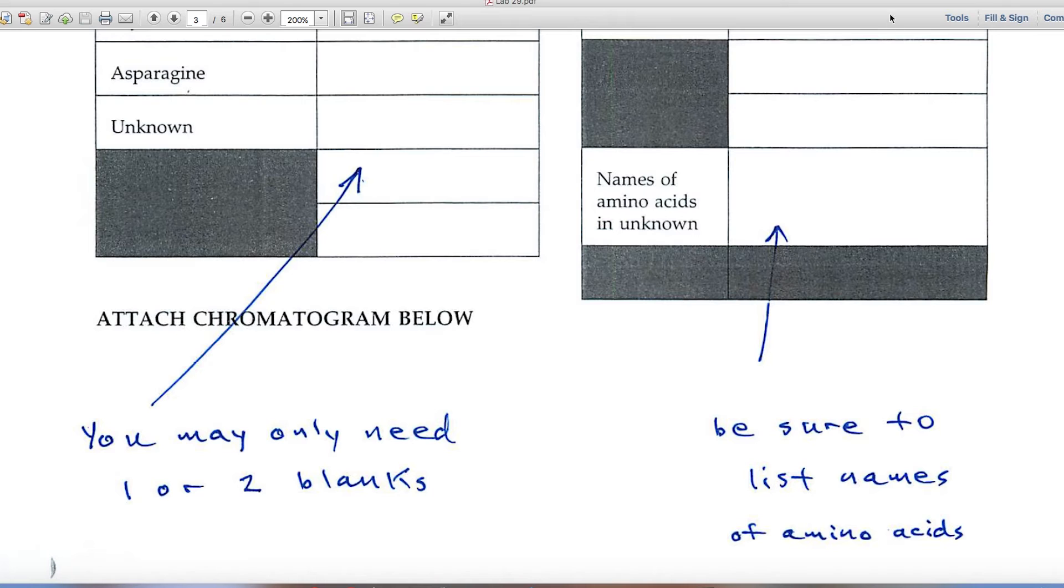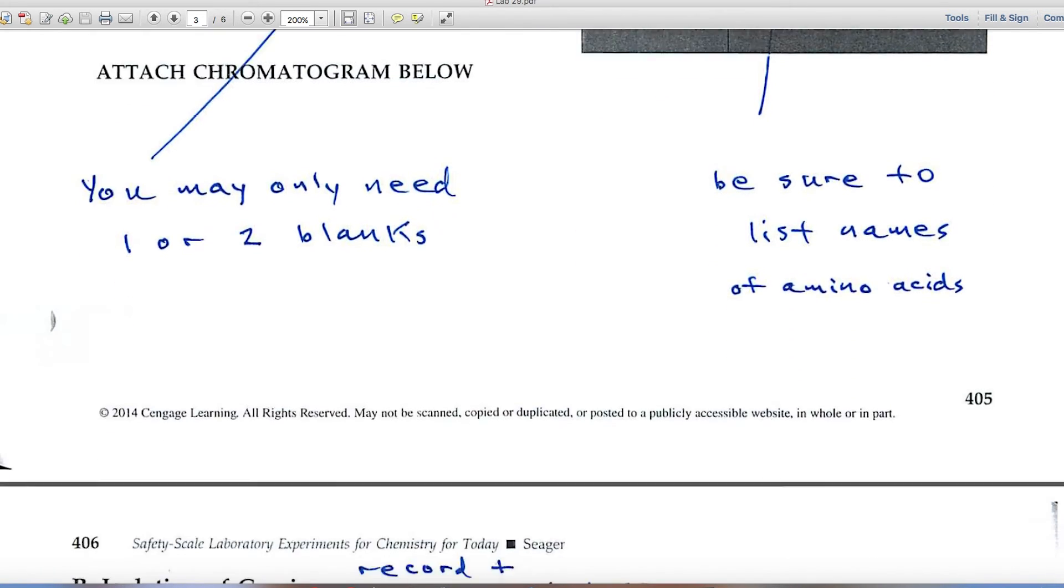Down here at the bottom of that table, up above, you've listed the RF values. Down here, you'll identify the amino acids that are actually in your unknown. Maybe one, two, or three. But use their names right there in that part.